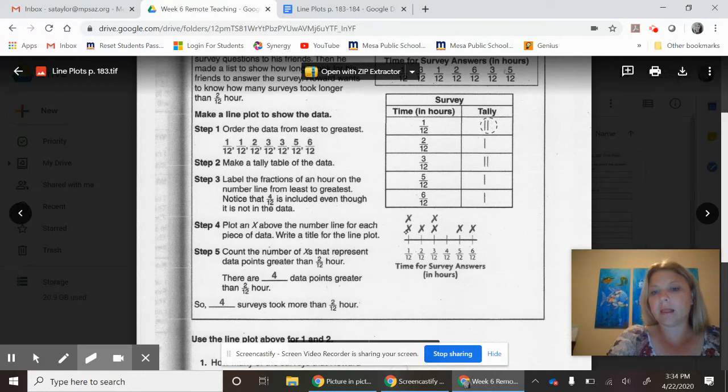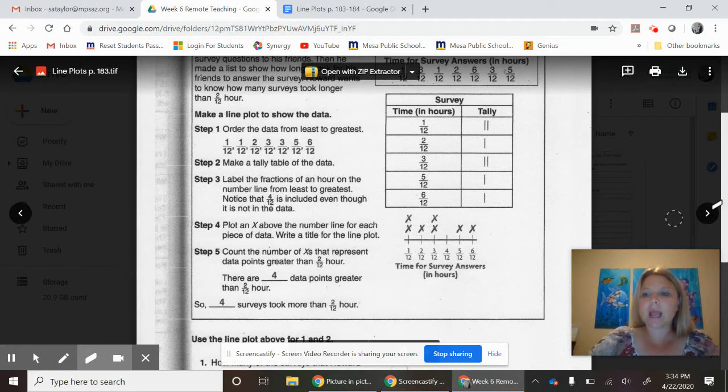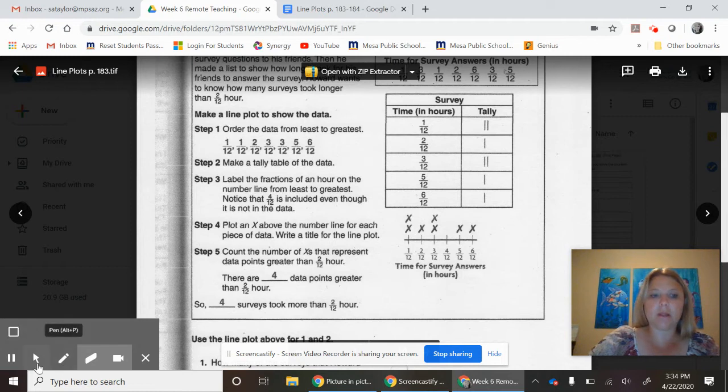Again, down here we have a line plot. They put the numbers smallest to greatest. Then each of the tally marks represents an X. Do you see how there's two tally marks up here? Well, that's why there's two X's down here. There's one tally mark here on two twelfths, so they just put one X down here for two twelfths. Each tally mark is represented down below.